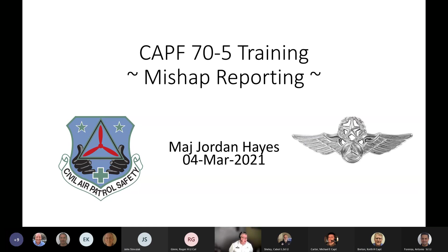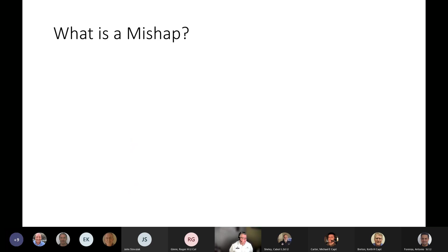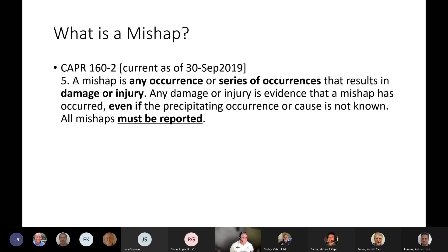There's a lot to talk about for mishap reporting. We're going to try to focus on the stuff that's relevant to the 70-5 training for you aircrew folks. The obvious first question is: what's a mishap? We can look in the regulation, 160-2, which is current as of September 2019. A mishap is any occurrence or series of occurrences that results in damage or injury.